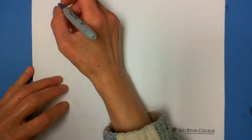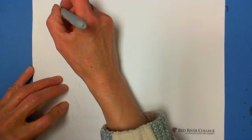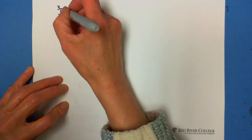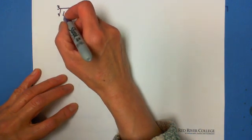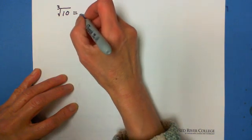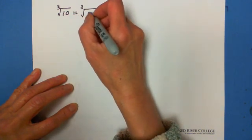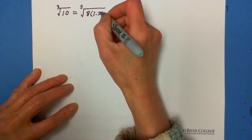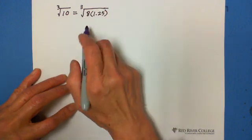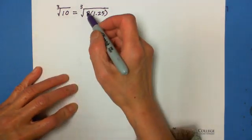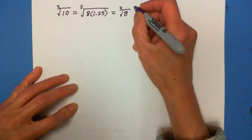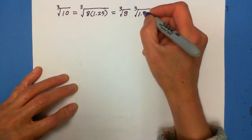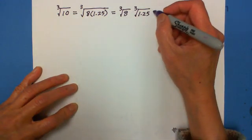For example, to approximate cube root 10, we can write the number inside the radical as a product of two numbers. We factor out: 10 equals 8 times 1.25, right? 8 times 1.25 equals 10. Then we can factor the cube root into cube root 8 multiplied by cube root 1.25. And cube root 8 equals 2.